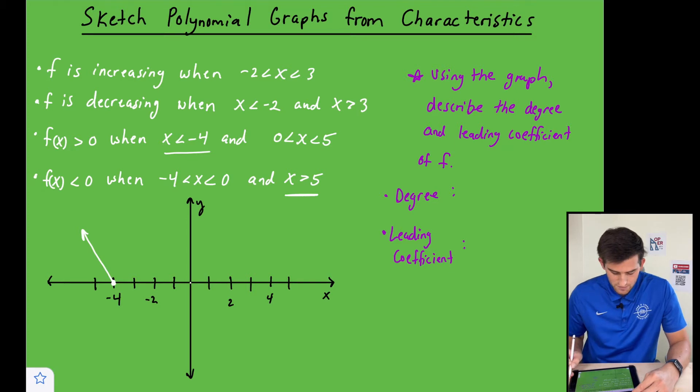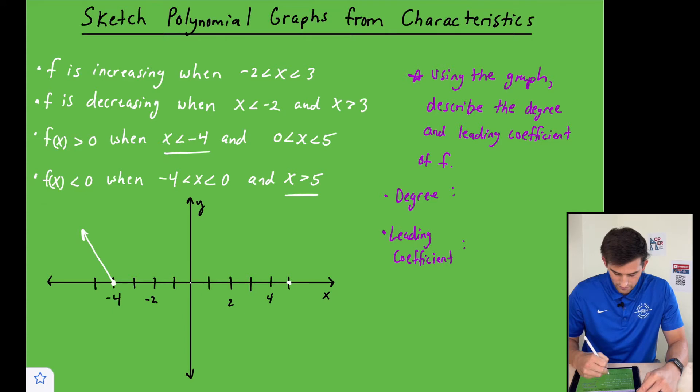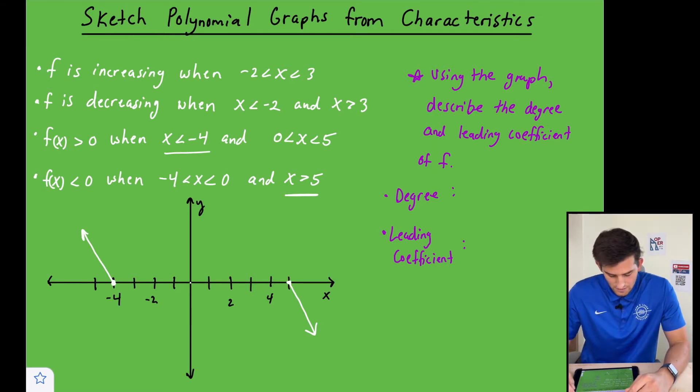And then this part tells me when our f of x is less than zero. So when x is greater than five, our graph is below the x-axis. So I kind of have the beginning point and the ending point of my graph there.